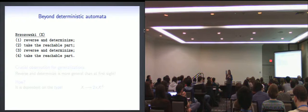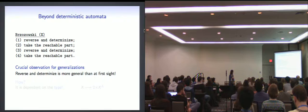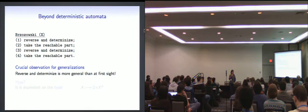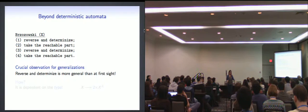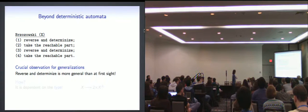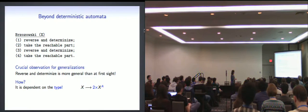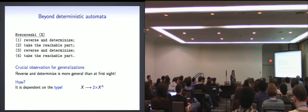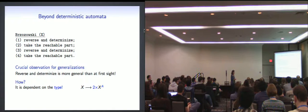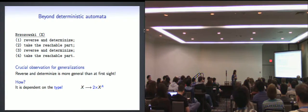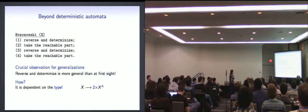So the crucial observation to kind of generalize this algorithm is that reverse and determinize. So this operation that actually in the original paper is presented as two separate operations. So there's reverse as one operation, then there's determinize as another operation. Actually, and that's why I wrote them in one line, they can be seen as one operation. So you can combine them into one operation. And when you do that, you can actually show that reverse and determinize are an operation that can be derived from the type of deterministic automata. So reverse and determinize comes from the type. I'm not telling you how, but trust me, it comes from the type. And once you observe that, you can actually use that to prove the correctness and to generalize this to other types of automata.